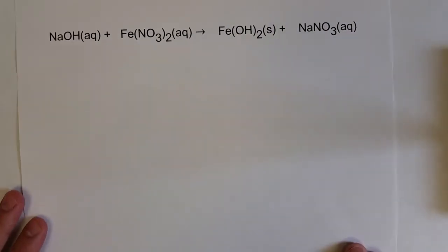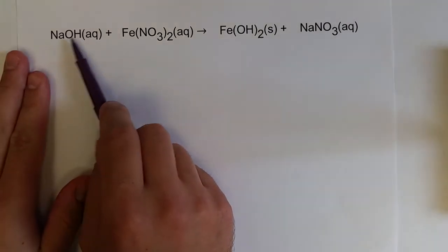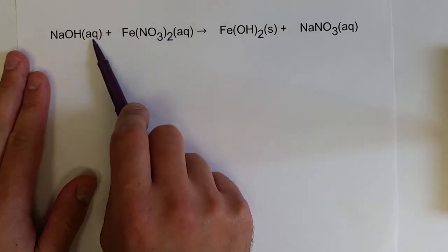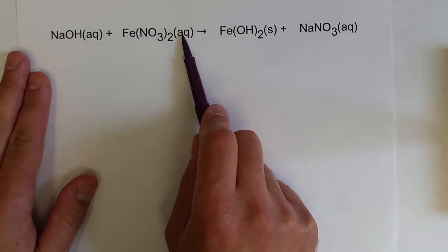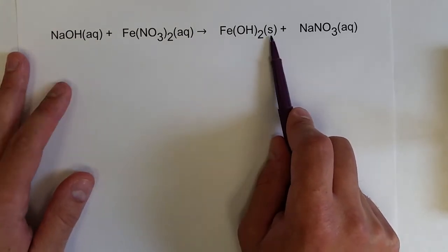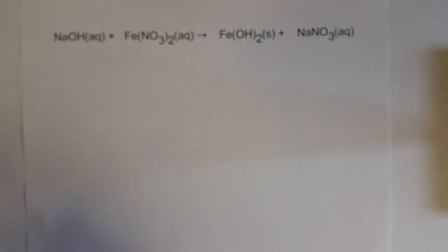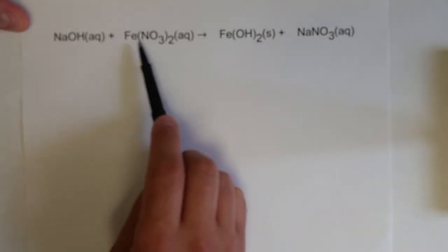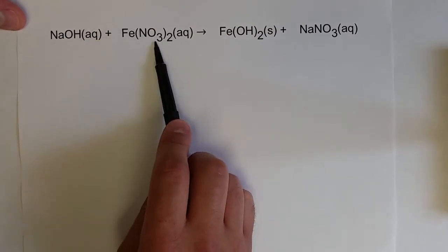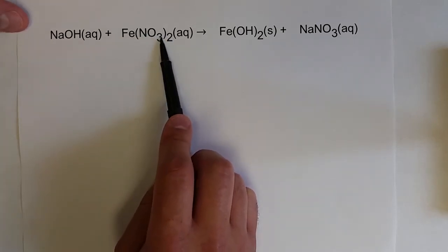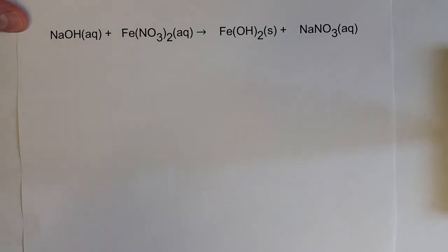Here is an example with polyatomic ions: sodium hydroxide reacting with iron two nitrate, both in the aqueous phase, to produce iron two hydroxide in the solid phase and sodium nitrate in the aqueous phase. When balancing, as long as the polyatomic ions don't change or react, you can balance them as one unit. So instead of counting individual nitrogen and oxygen atoms, I think of two nitrate polyatomic ions.